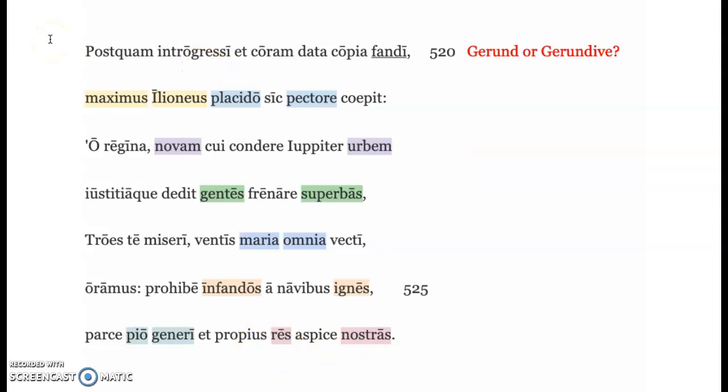So Ilioneas is one of the Trojan leaders traveling with Aeneas. He goes up to Queen Dido and speaks out to plead with her for various things, mostly for protection.